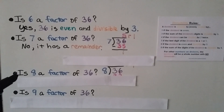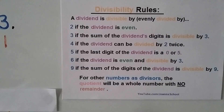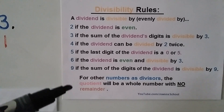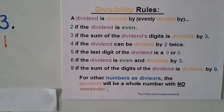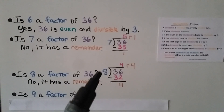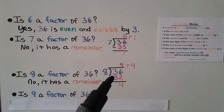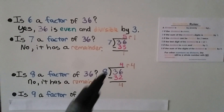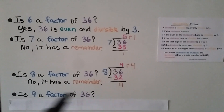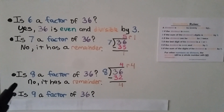Is 8 a factor of 36? 8 isn't on our divisibility rules list, so we use division. 36 divided by 8: 8 fits in 4 times, and 8 times 4 is 32. We subtract and get a remainder of 4. So no, 8 is not a factor of 36 because it has a remainder.